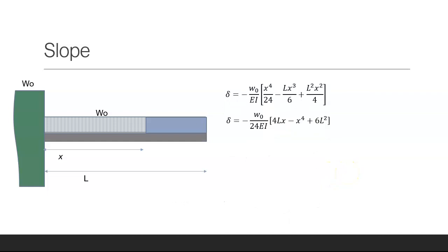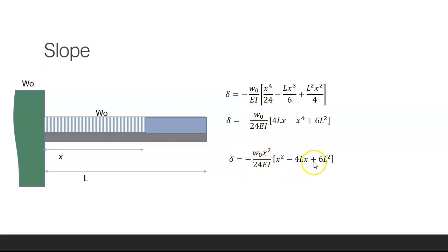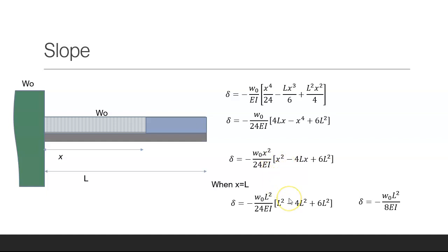When x equals L I substitute in for L. Tidying up the equation by factoring out x squared over 24, the deflection at any point is given by that formula. When x equals L, the maximum deflection is w naught L to the 4th over 8EI.